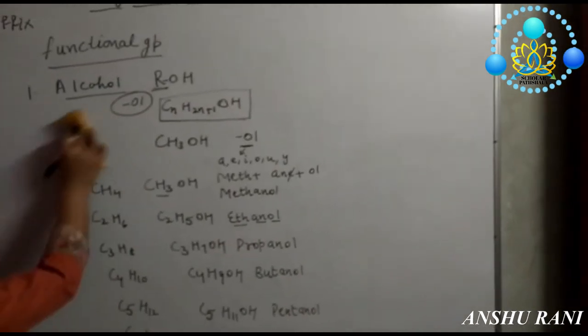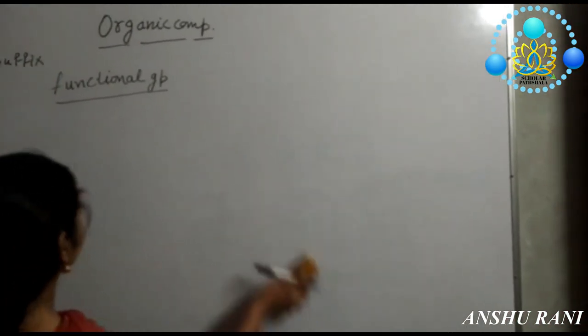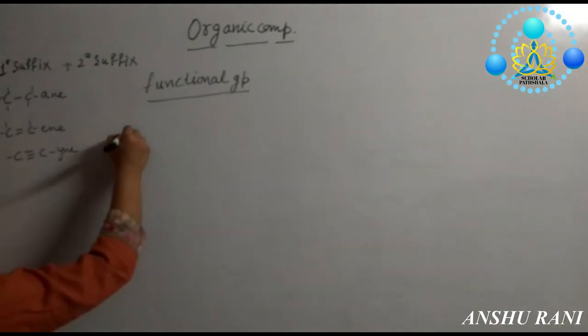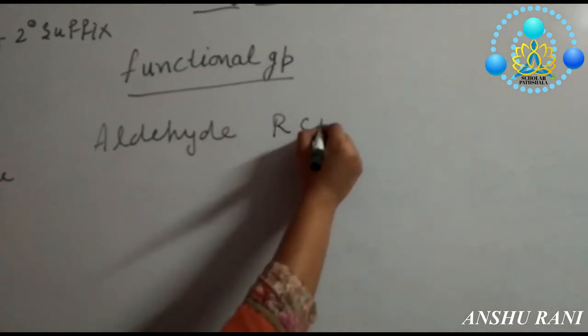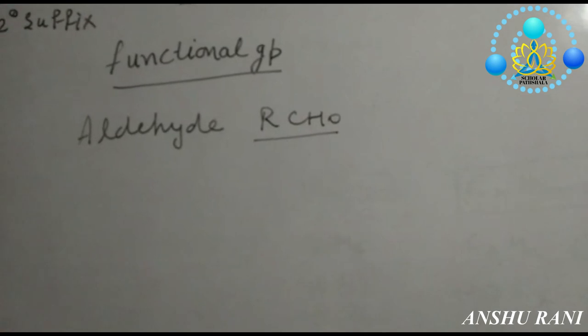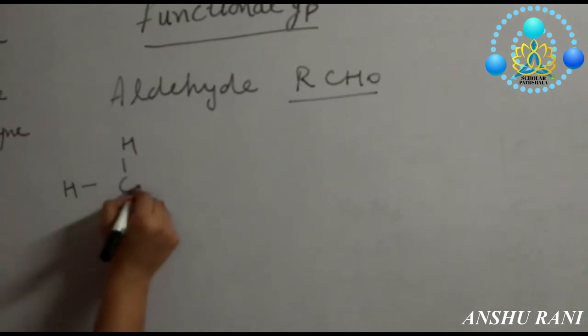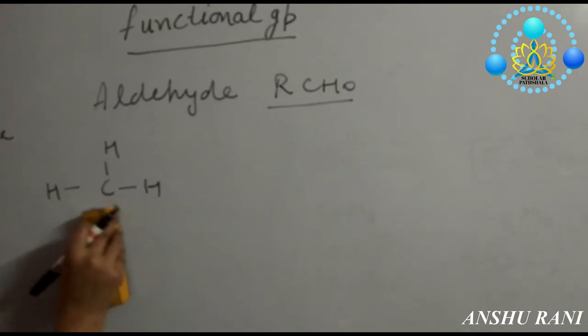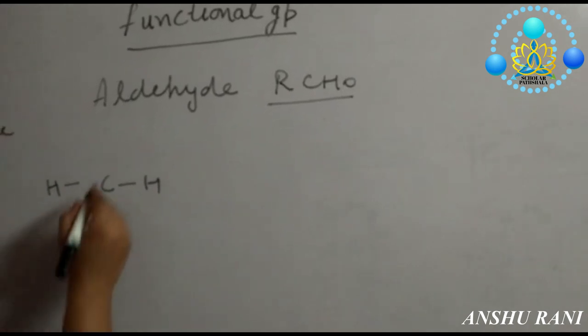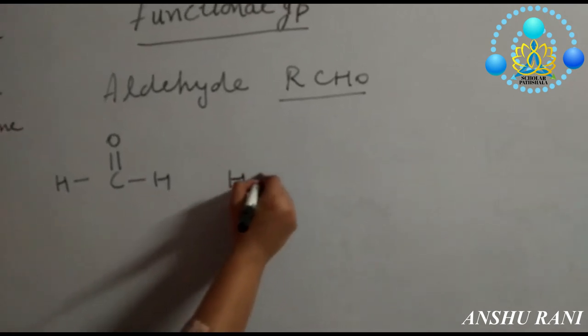Second functional group is aldehyde. Aldehyde group is RCHO. What you have to do basically here: when you are having structure of methane, you just have to remove these two hydrogen atoms, remove these two hydrogen atoms and replace it with one oxygen.